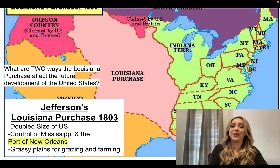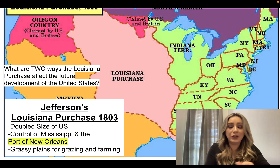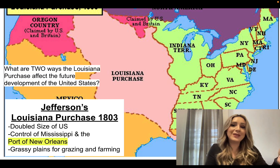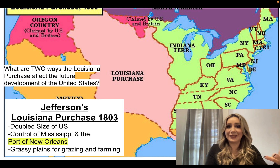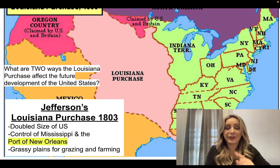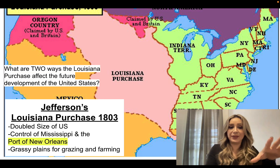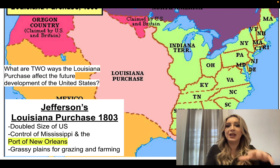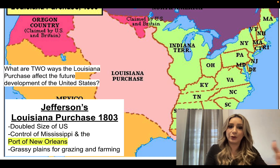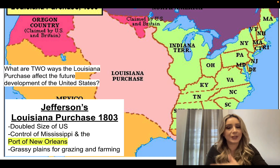The Louisiana Purchase doubled the size of the United States and gave us control of the Mississippi River. How does that affect future development? First, it opens up the port of New Orleans for foreign markets — we're able to import and export with other countries. Second, control of the Mississippi River allows the United States to transport goods up and down much more efficiently. And finally, all of this new land with very fertile soil means America is able to farm, grow, and expand to the west — westward expansion.